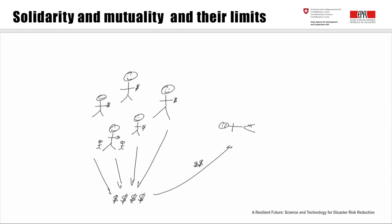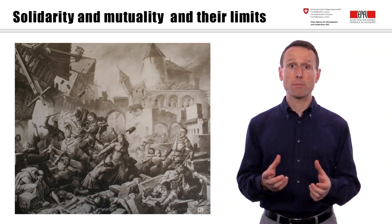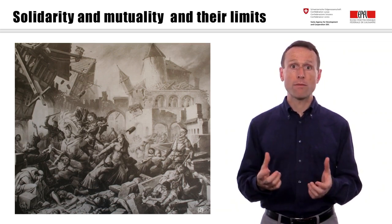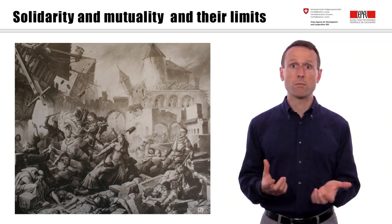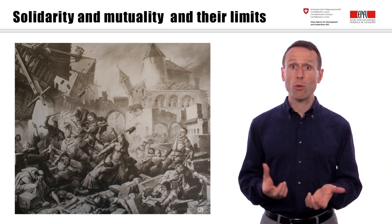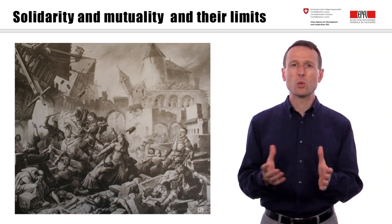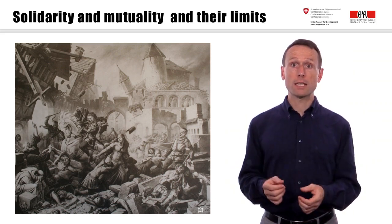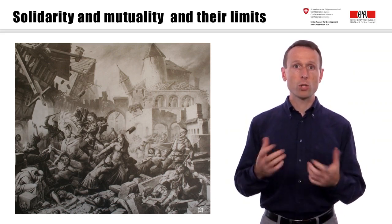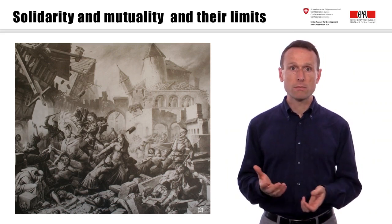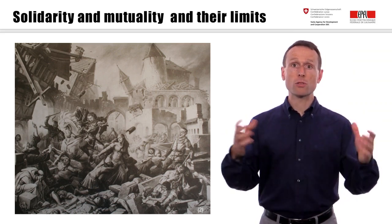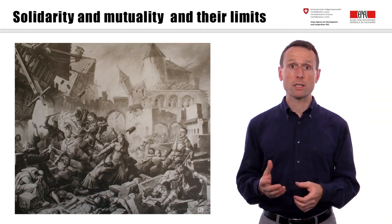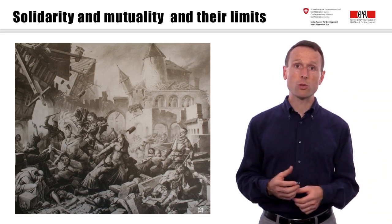However, there are limits to what can be handled through solidarity within a community. If health issues become an epidemic, if a fire ravages a whole slum, or a city gets destroyed by an earthquake, the risk pool is too small. And more importantly, all members are hit by the same event, with mutuality basically breaking down. This is where pooling across different risks and geographies through reinsurance comes in.